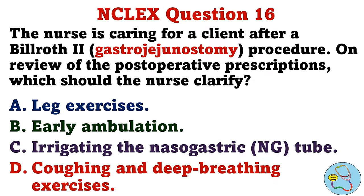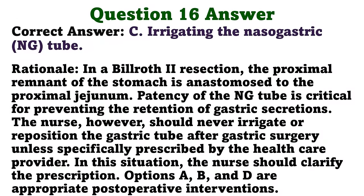The nurse is caring for a client after a Billroth II procedure. On review of the postoperative prescriptions, which should the nurse clarify? A. Leg exercises. B. Early ambulation. C. Irrigating the nasogastric tube. D. Coughing and deep breathing exercises. The correct answer is C: irrigating the nasogastric tube. In a Billroth II resection, the proximal remnant of the stomach is anastomosed to the proximal jejunum. Patency of the NG tube is critical for preventing the retention of gastric secretions. However, the nurse should never irrigate or reposition the gastric tube after gastric surgery unless specifically prescribed by the healthcare provider. In this situation, the nurse should clarify the prescription. Options A, B, and D are appropriate postoperative interventions.